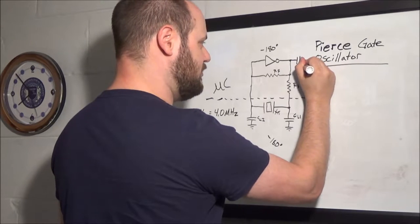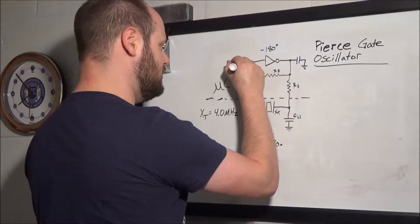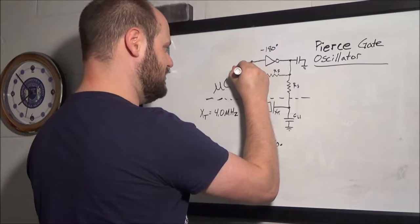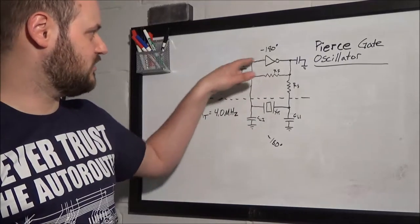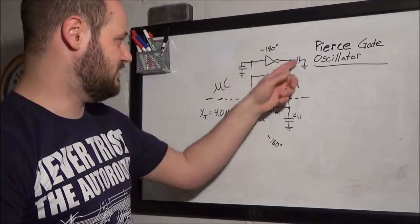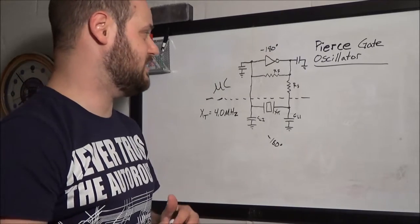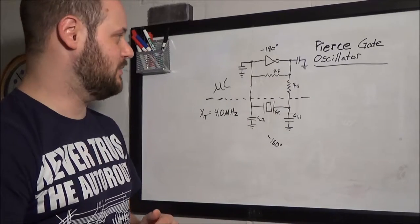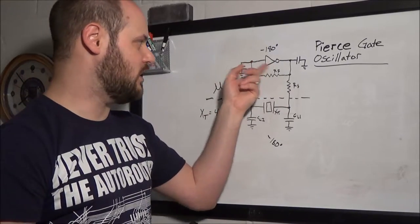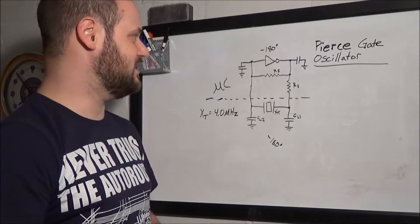There is a parasitic capacitance to ground on both the output and the input, respectively. So, this feedback resistor works in conjunction with the capacitance on the pins of the gate and the internal capacitance, those parasitic capacitances, to make this more of a linear amplifier.